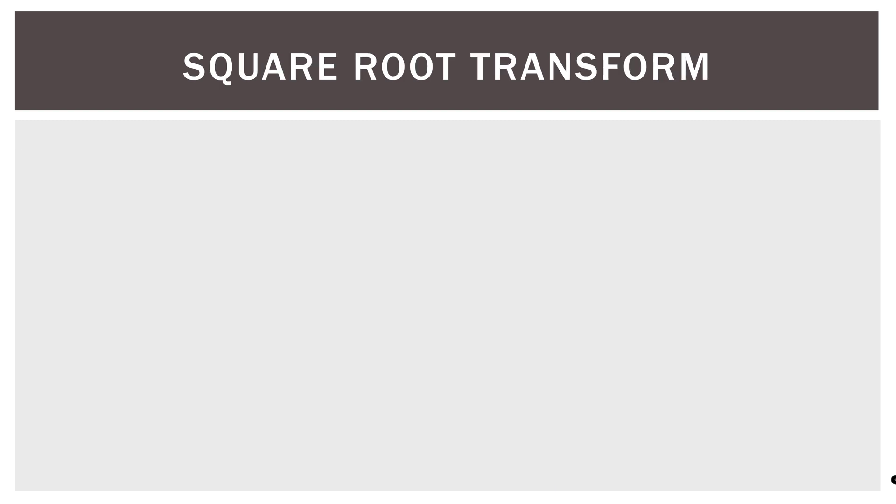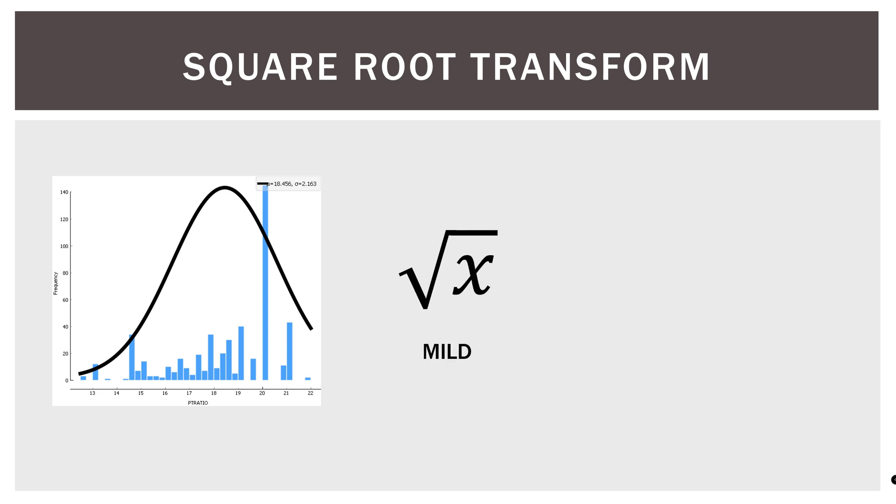First, we have the square root transform. On the left, we have the distribution for the variable PT ratio in the Boston data set. PT ratio stands for pupil teacher ratio. It's also known as student teacher ratio. And it makes sense. We have a low of about 12 students per teacher on the left side, and then a high of about 22 students per teacher on the right-hand side. Now this is skewed to the left. There's a long tail to the left, but it's relatively mild. So we might implement the square root transformation. So we would go ahead and do that. And the distribution now looks like this.